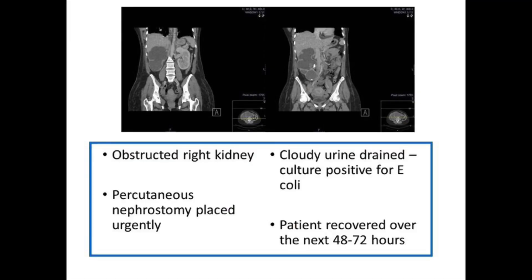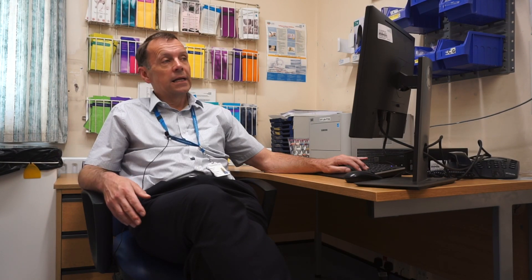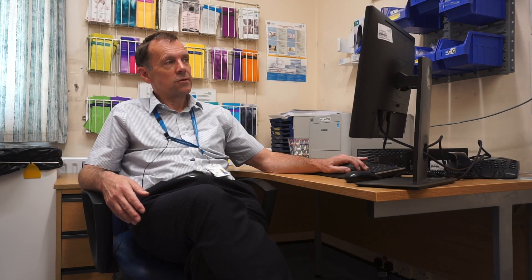Our action was to urgently image her. As you can see from the cross-sectional CT scan, what we found was an obstructed kidney due to an impacted stone causing a massive hydronephrosis. This patient is not going to get better unless we intervene. She had a percutaneous nephrostomy placed, drained cloudy urine which subsequently grew E. coli, and gradually improved over the next 48 to 72 hours. Unfortunately there was very little residual kidney function in that kidney, and the urologist later decided to remove it to prevent further episodes of life-threatening sepsis.